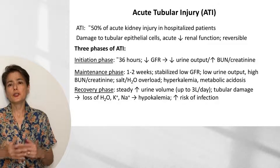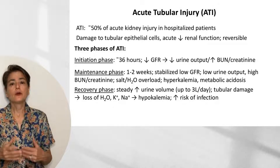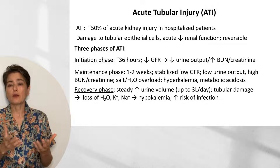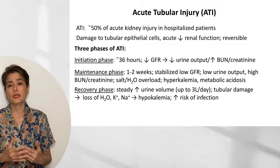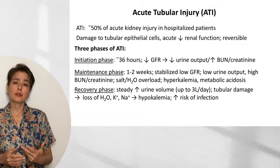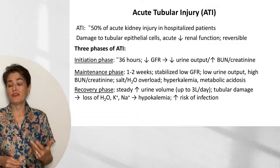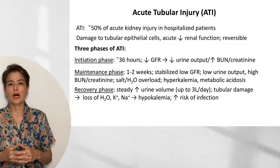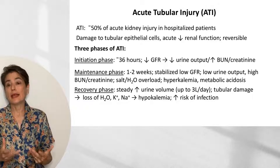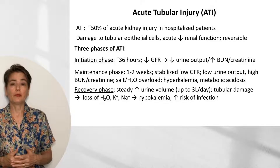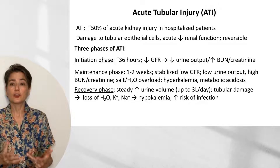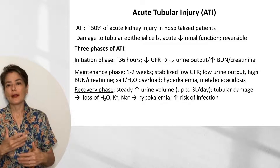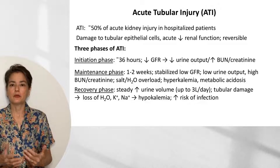Acute tubular injury is one of the principal causes of acute kidney injury. In fact, in hospitalized patients, about 50% of those who have acute kidney injury have it due to ATI. ATI is damage to the tubular epithelial cells causing an acute decrease in renal function, but if you correct the underlying injury, it can be reversible.